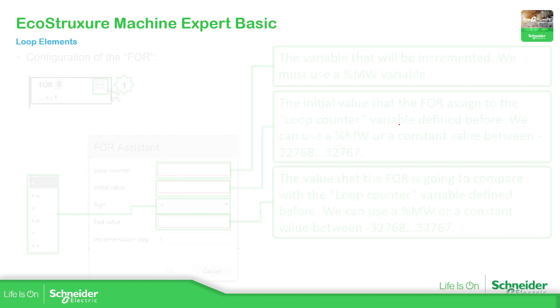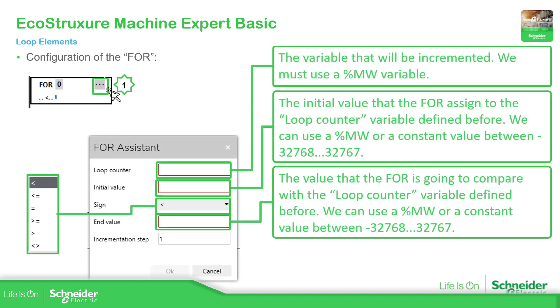So now once we open this configuration button over here, we can see that we have the loop counter initial value, the sign that will be the comparison until it reaches the value, and the end value and also the increments of the step. So for the loop counter, what we have is the variable that we're going to be increased %MW. Then the initial value so it will start on one value.